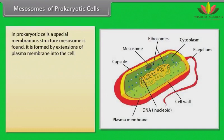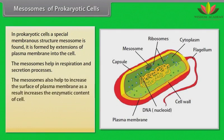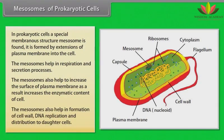In prokaryotic cells, a special membranous structure called mesosome is found. It is formed by extensions of the plasma membrane into the cell. The mesosomes help in respiration and secretion processes, and also help to increase the surface area of the plasma membrane, thereby increasing the enzymatic content of the cell. Mesosomes also help in formation of the cell wall, DNA replication, and distribution to daughter cells.